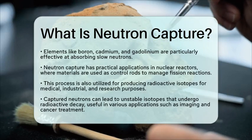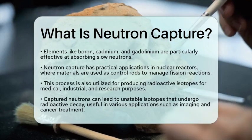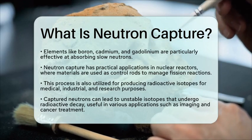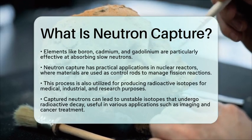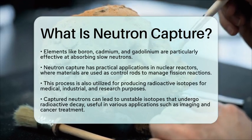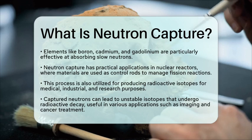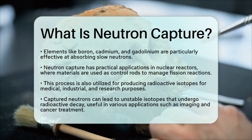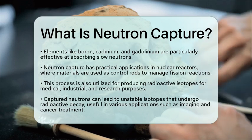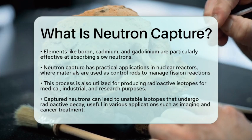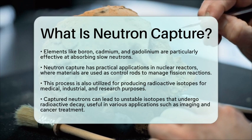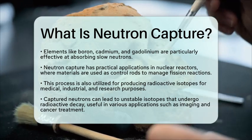Neutron capture is also a common method for producing radioactive isotopes. When a stable nucleus captures a neutron, the resulting isotope may be unstable and undergo radioactive decay. This process has been utilized in medicine, industry, and scientific research to create isotopes used in imaging, cancer treatment, and tracing chemical pathways.